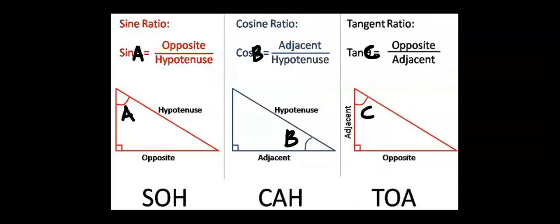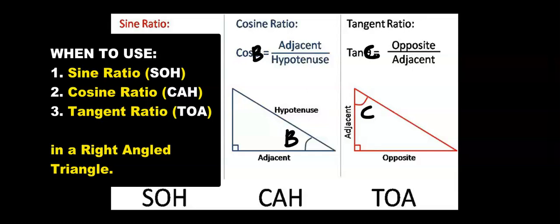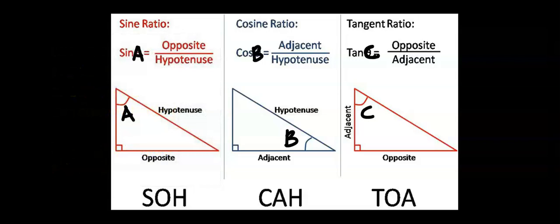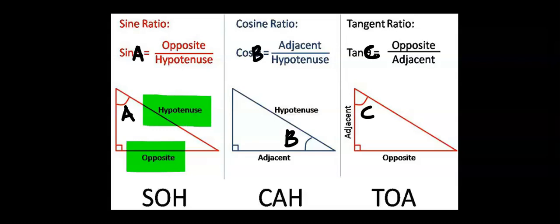To apply SOHCAHTOA, we just need only two sides and one angle — unlike Pythagoras, where we need all three sides. If we know the value of the side facing the angle and also know the value of the hypotenuse, which is the longer side, then we're going to use the sine ratio, which is opposite over hypotenuse.